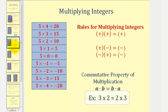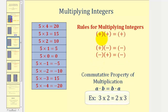Which means now we have three rules for multiplying integers. We know that a positive times a positive is positive, and if the signs are different, the product is negative. The only rule remaining is when we have a negative times a negative.